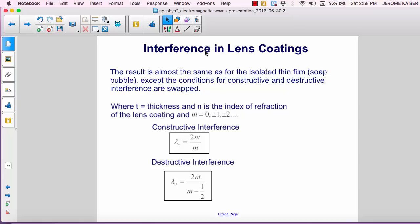Destructive interference occurs for lambda sub d equals 2nT over m minus a half.